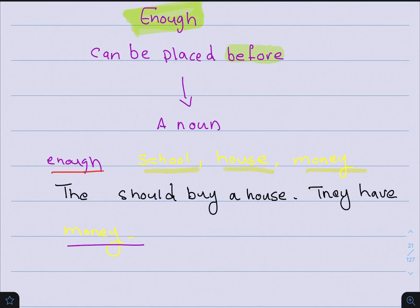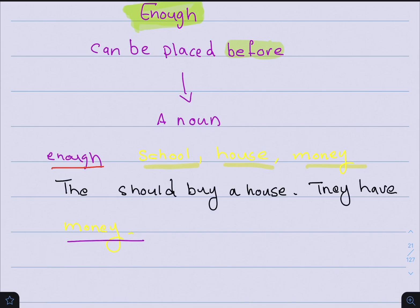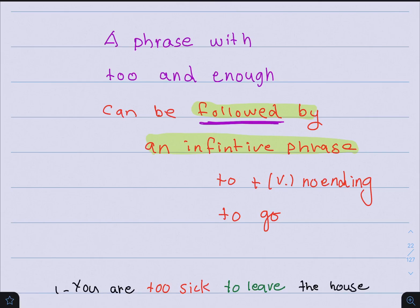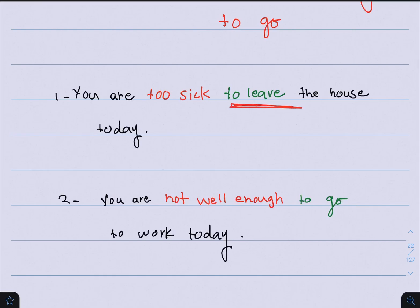Sometimes a phrase with too and enough can be followed by an infinitive phrase. The infinitive is 'to' plus the base form of the verb — to go, to eat, to meet. For example: You are too sick to leave the house today. You are not well enough to go to work today.